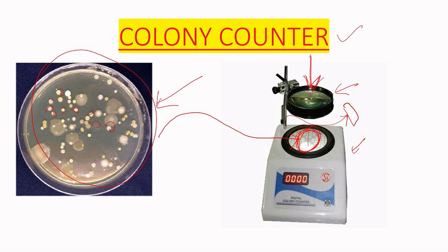Through this magnifying glass, we will see all the colonies. With this pen, we have to mark or press all the colonies one by one. As we press each colony, the count will be shown here digitally. After counting all the colonies, we will see the count.